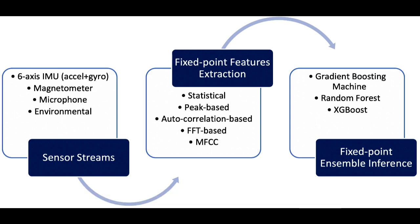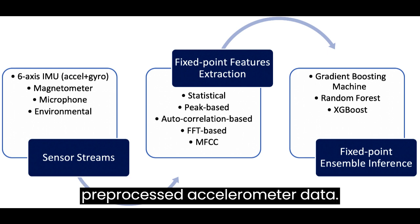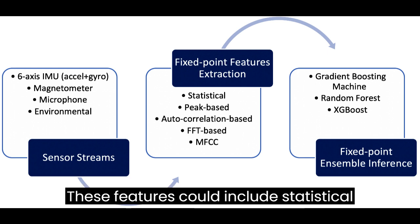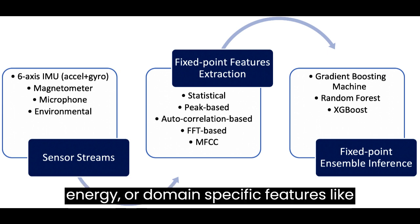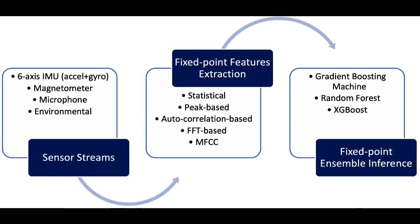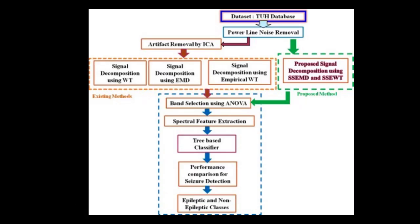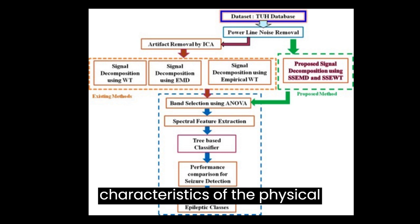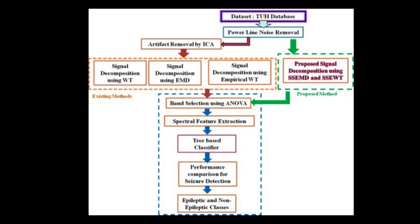Feature extraction. Extract relevant features from the pre-processed accelerometer data. These features could include statistical measures such as mean, variance, or energy, or domain-specific features like peak frequency or zero-crossing rate. Choose features that capture important characteristics of the physical activities.